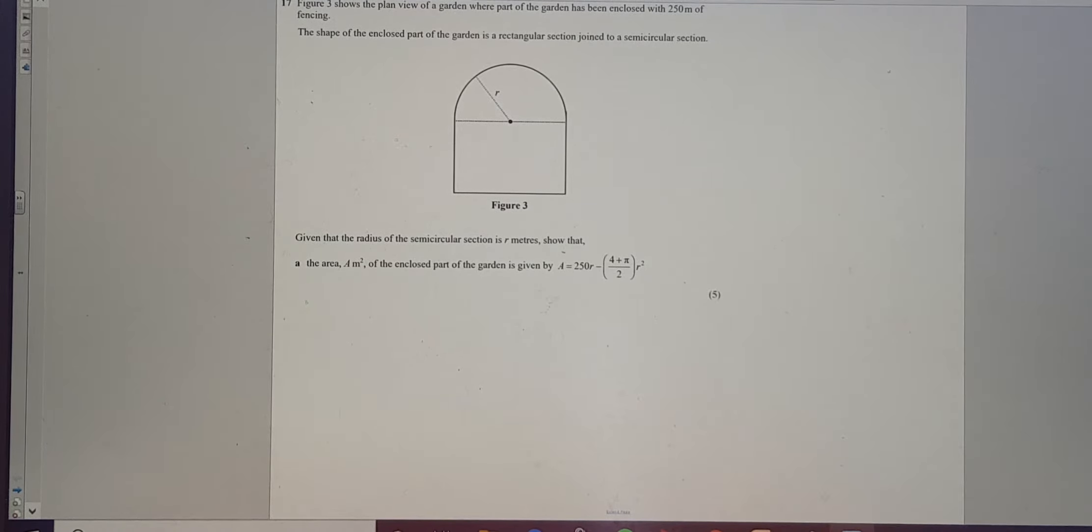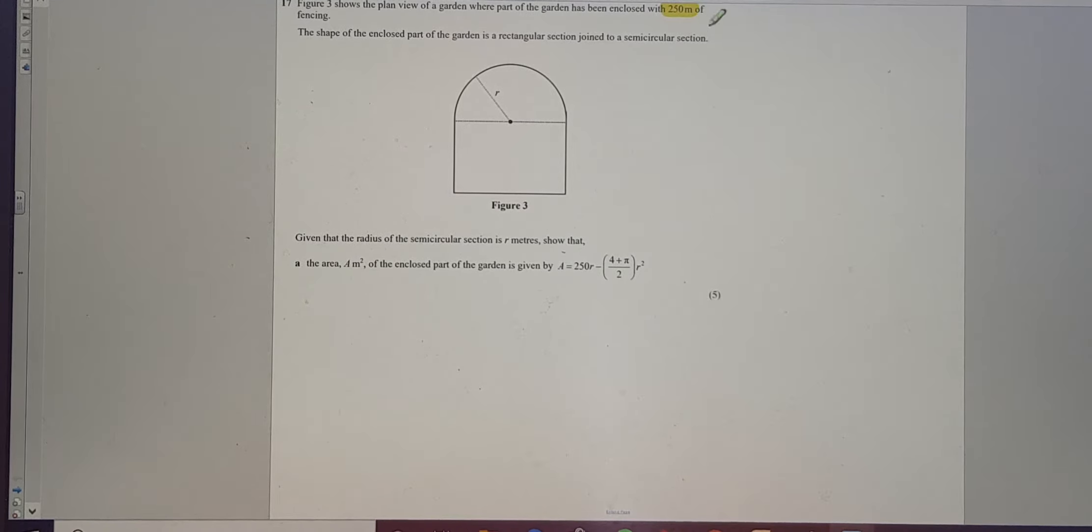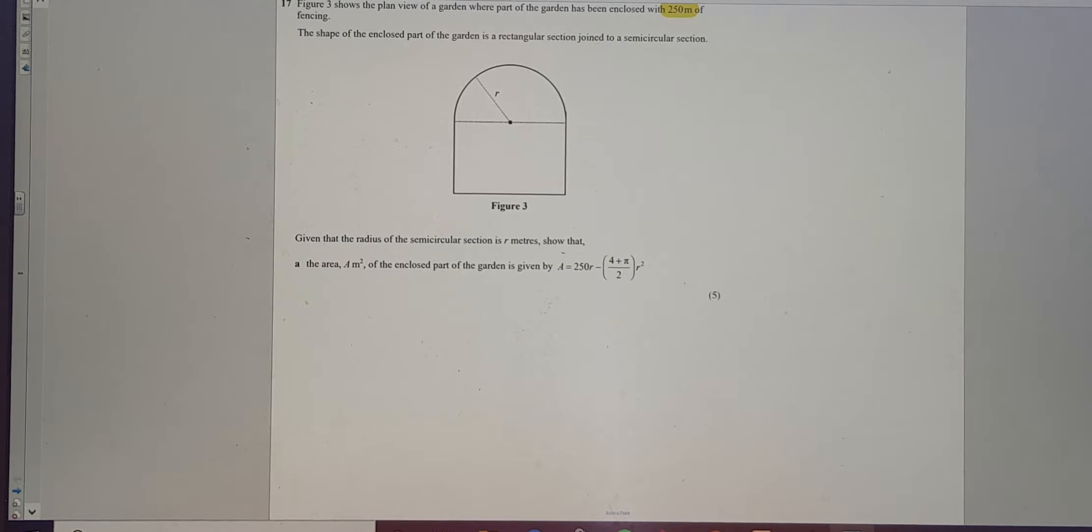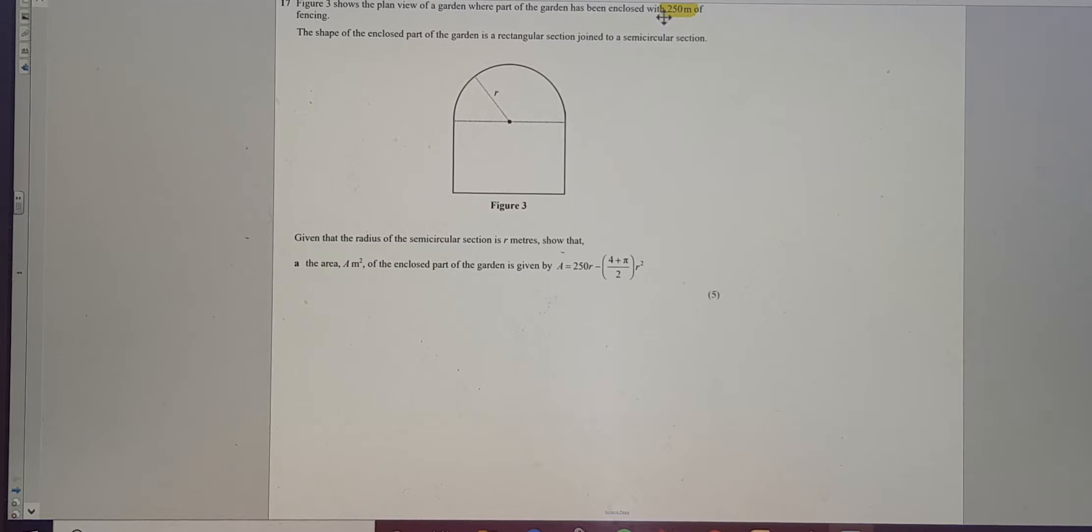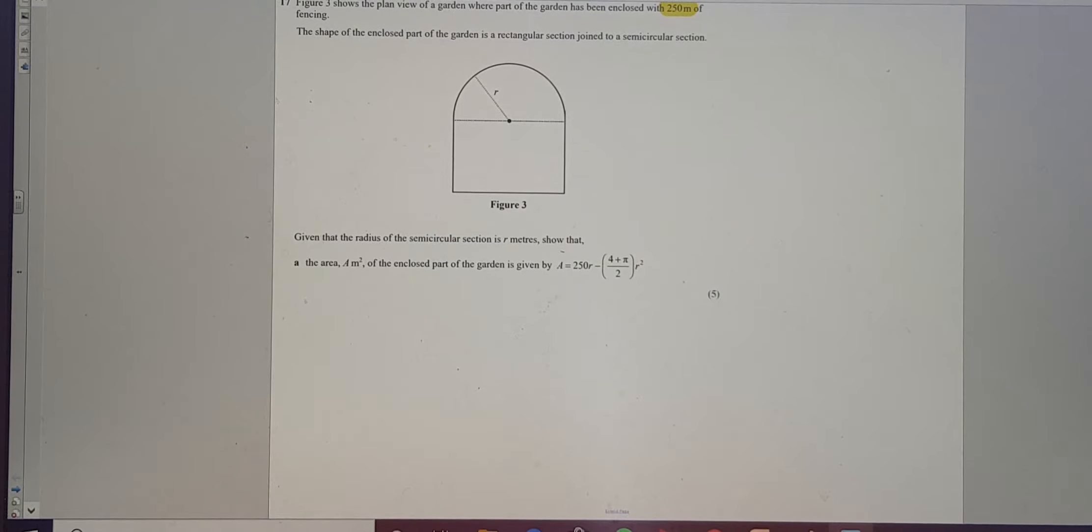If they've given me the perimeter, that's the first thing I'm going to use. They've told me this piece of information for a reason. This is the perimeter. So let's come up with an expression for the perimeter and then equate it to 250 metres. First thing I'm going to need to do is just label my sides.